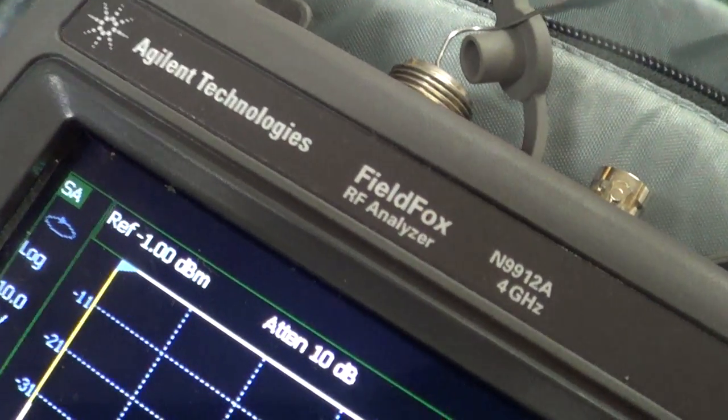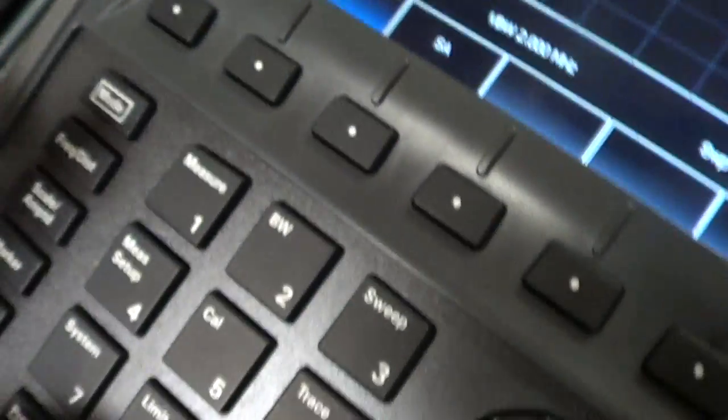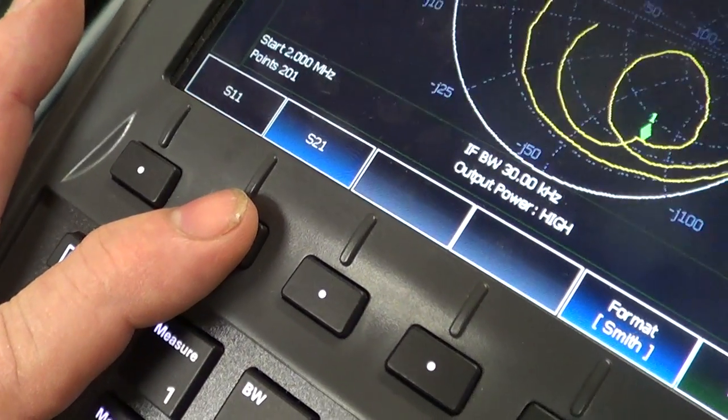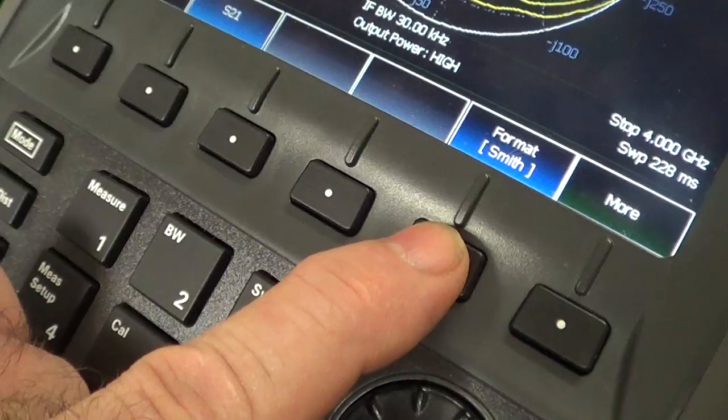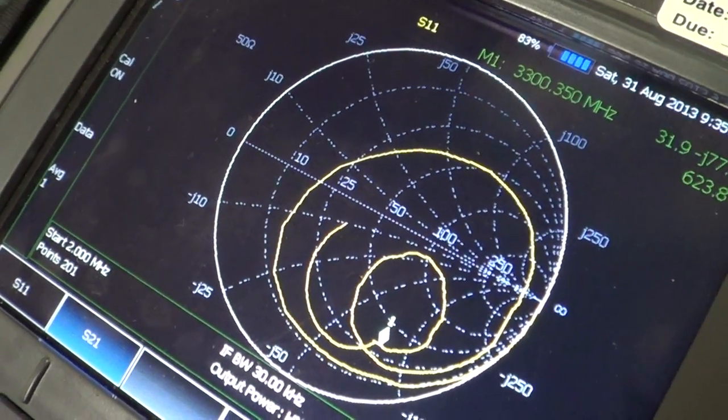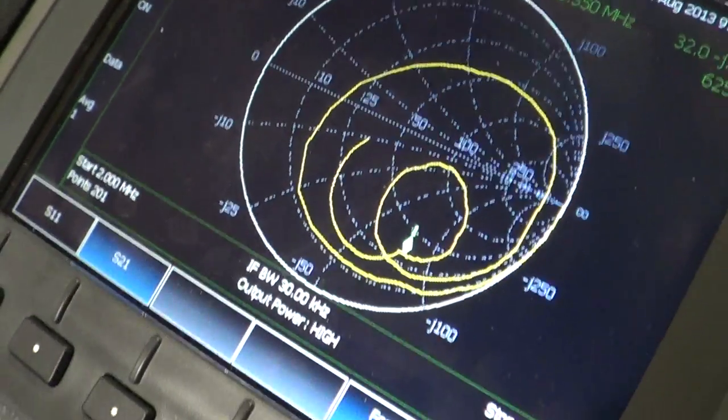So Field Fox N9912A, I'm going to go over here and put it in network analyzer mode. We've selected the Smith chart, so we can go over here and see with the paper clip what we've got.